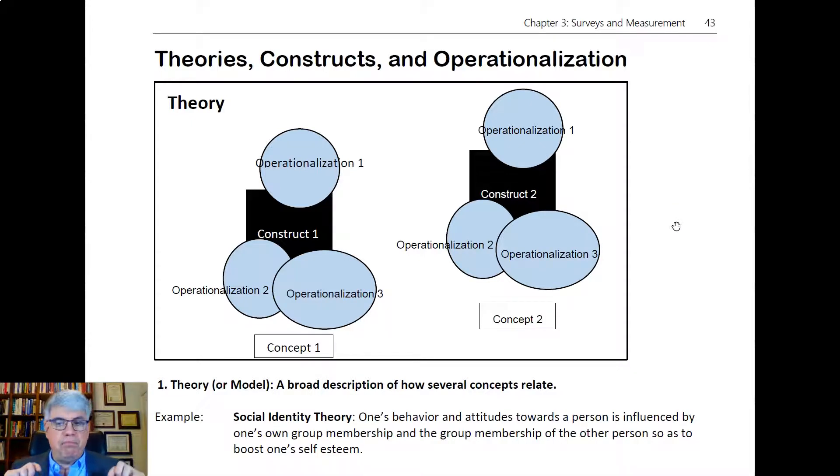A theory is a broad description of how several concepts relate to each other. We can use it to explain why things happen if the theory is supported by data. If it's not supported by data, we just kind of toss it aside and say this is not something worthwhile or useful.